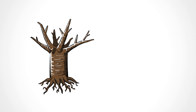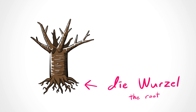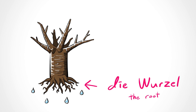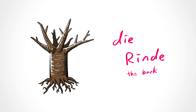Unlike the other parts, the root is not masculine — it's feminine: die Wurzel. Why? Well, you can either think that it's because behind every great man is a great woman, or because the root sucks liquid. Your choice. There's also die Rinde — the bark of a tree. It ends with E, so it's pretty obvious that it's feminine.